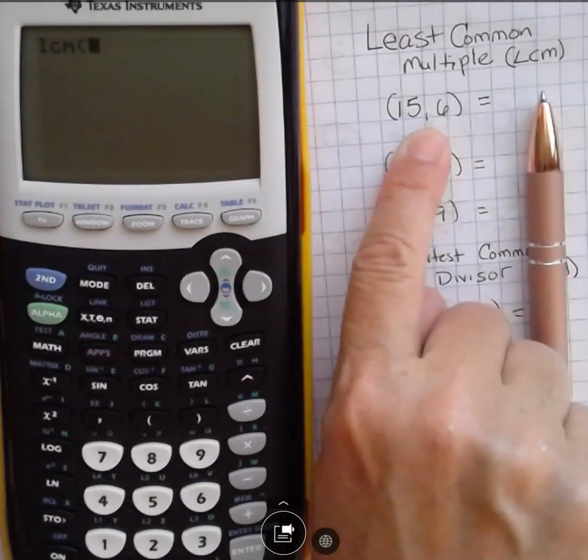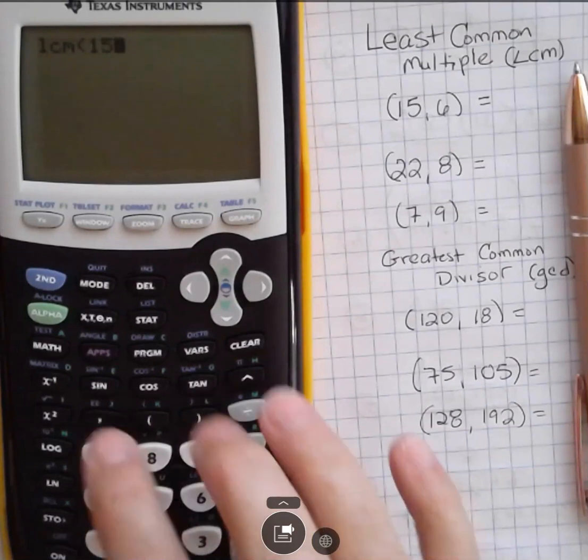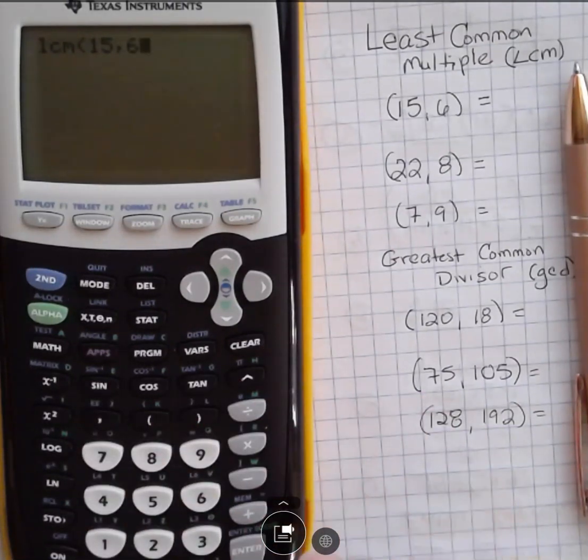This is important that you put in your comma here and your 6. And in this case, if I hit enter without finishing off my parentheses, it's okay. I think it's a good practice to just put those parentheses in, but sometimes a calculator lets you get away with that. What that says is that 15 and 6 both go into 30, and it's the first number that they both go into.